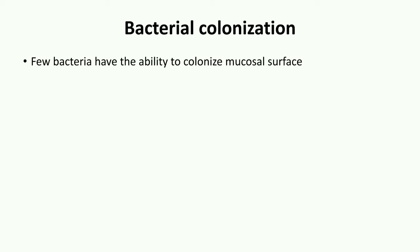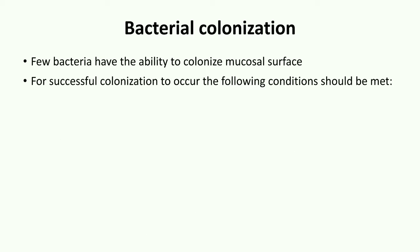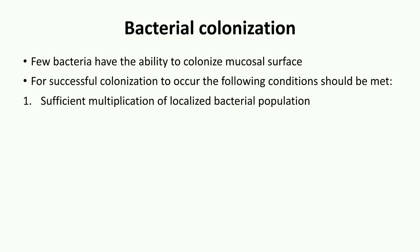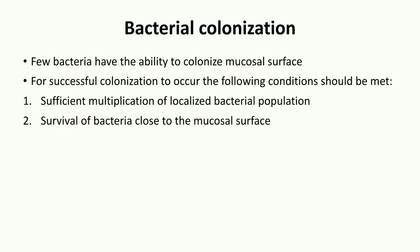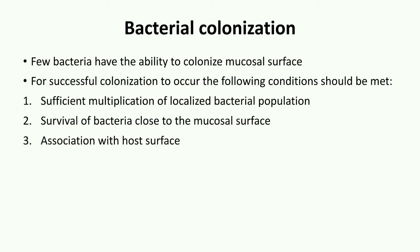Only a limited number of bacterial species have the capacity to colonize the mucosal surface, and even fewer have the capacity to establish a parasitic relationship with the host. As a critically important first step in mucosal infection, bacteria must establish and maintain their position in close proximity with the mucosal surface. For successful colonization to occur, sufficient multiplication of the localized bacterial population should occur, and bacteria must survive close to and associate with the mucosal surface by binding to mucus or by chemotaxis.